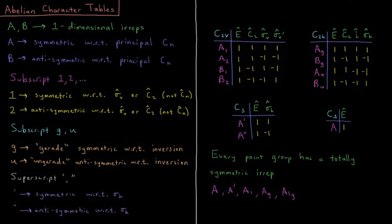So now we've come to character tables, which are concise representations of the different irreducible representations of each point group. A character table is going to correspond to a specific point group. Every point group has a specific character table.